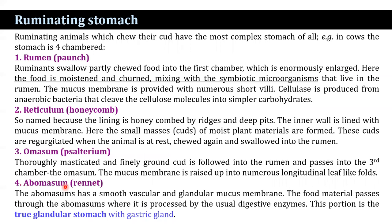The ruminating animals that chew their cud have the most complex stomach. In the cow, the stomach has four chambers: rumen, reticulum, omasum, and abomasum. The rumen receives the swallowed, partly chewed food, which is enormously enlarged; food is moistened and churned, mixing with symbiotic microorganisms. The mucous membrane bears numerous projections, and anaerobic bacteria clip cellulose molecules into simpler carbohydrates. The reticulum is a honeycomb-patterned structure, so named because of ridges and deep pits forming complex patterns. Here, small masses of moist plant material are formed into cuds, which are regurgitated when the animal is at rest, chewed again, and swallowed back into the rumen.